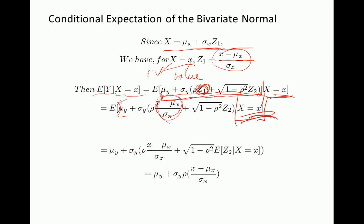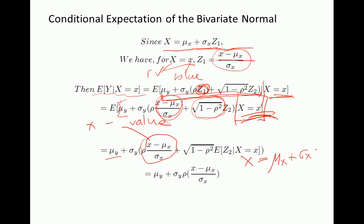The substituted expression is a constant because small x is just some value, so we don't need to take the expectation of that part — it comes outside the expectation. We're left needing only the expectation of z2 given x equals x. But z2 does not depend on x in any way, so the expectation of z2 conditional on x just equals the expectation of z2, which is zero since z2 is normally distributed with mean zero.